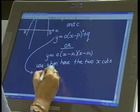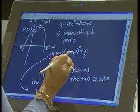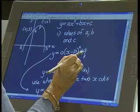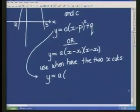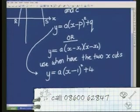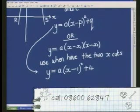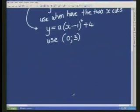The teacher guides Nongklankla to substitute P and Q values from the turning point into the formula, getting y = a(x - 1)² + 4. They then need to substitute the y-intercept point (0,3) to find A.